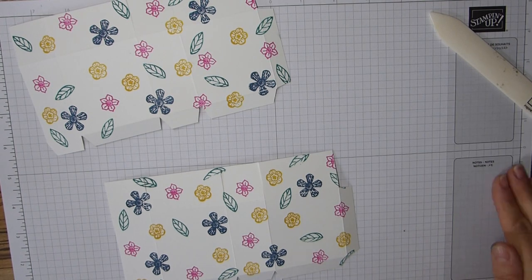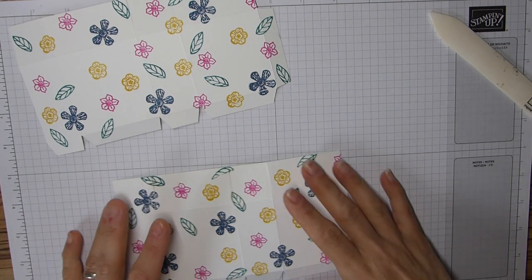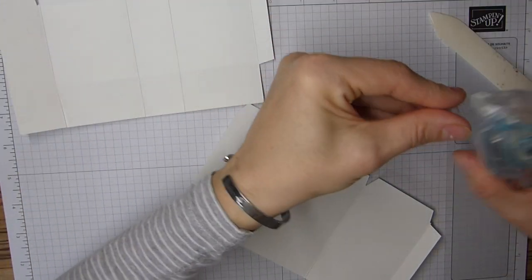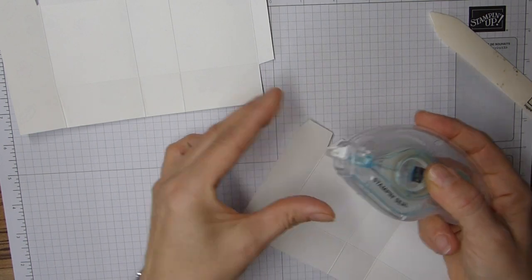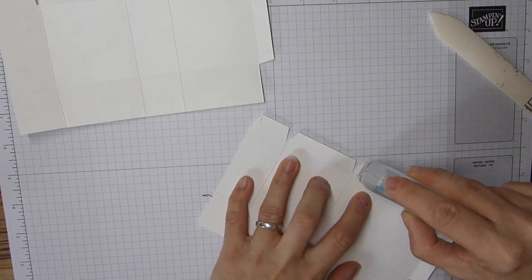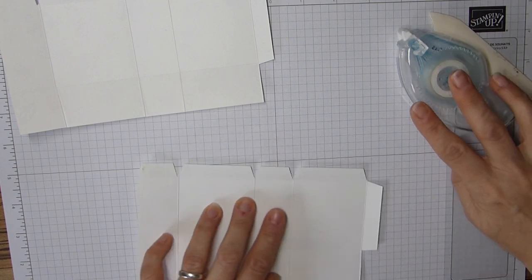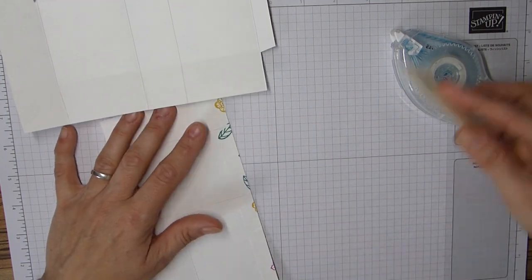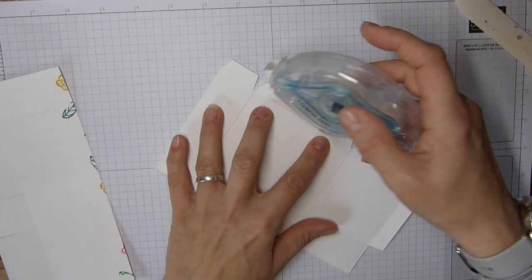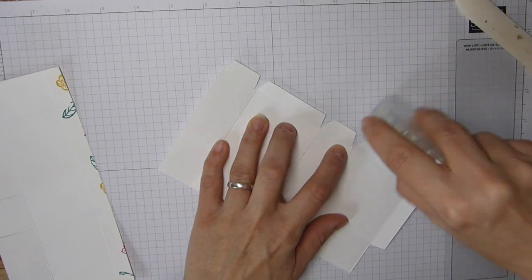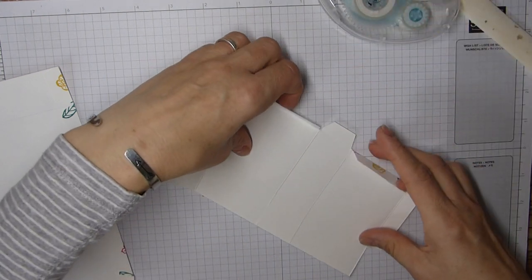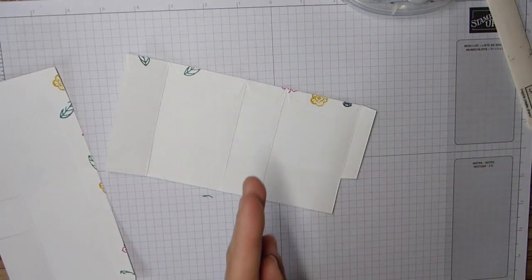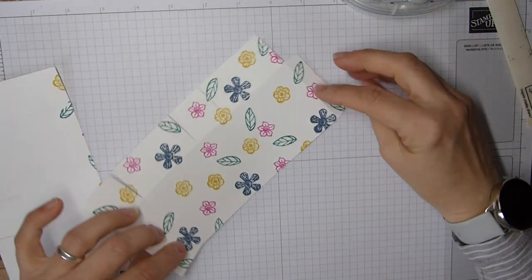Fabulous. Once you've done that flip it over and the small side we're going to pop some adhesive on all of these tabs and simply fold them in. They're just acting as reinforcements. The same again on this piece, just fold them all in and I'm just putting them down with my bone folder to make sure they stick.